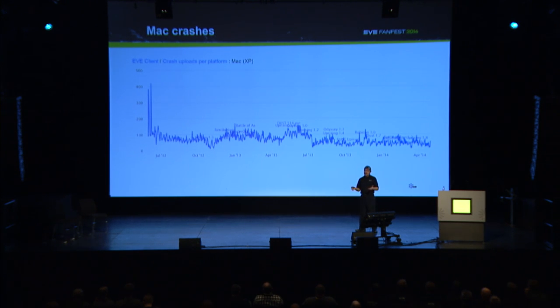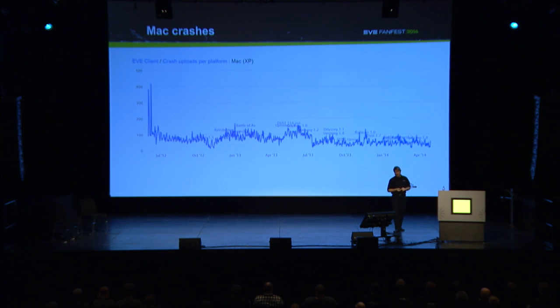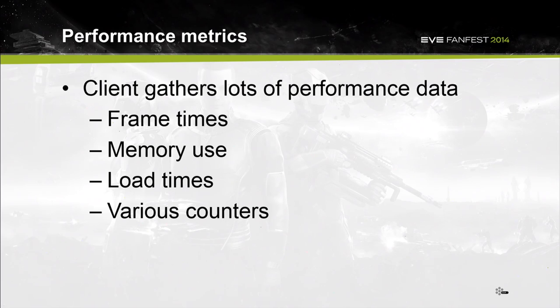With all this crash data, we can categorize it by platform. For example, here are crashes on the Mac specifically — we're seeing way too many, but at least it has been trending quite nicely downwards. On to performance metrics: we already have in the client a system that gathers a lot of performance data, like frame times and memory use, similar to what we aim to do with the probe. But this is data coming from the client after the fact — this is our way of monitoring how the EVE client is doing. With EVE Probe, we really want to get ahead of the curve.